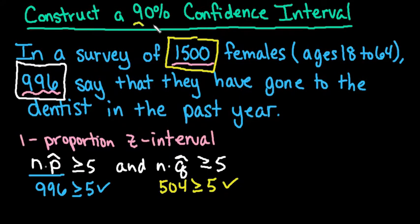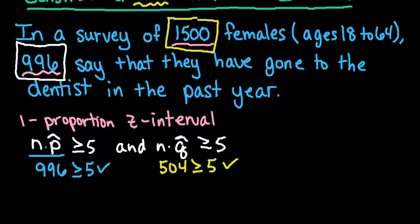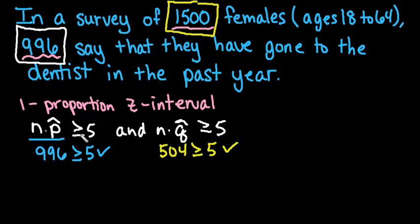So with this, we are constructing a 90% confidence interval. That's our level of confidence that we're going to use.